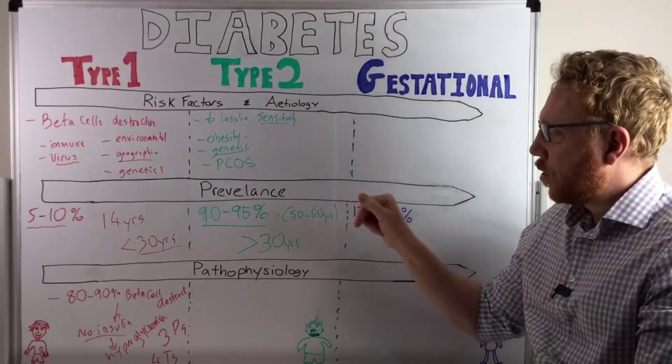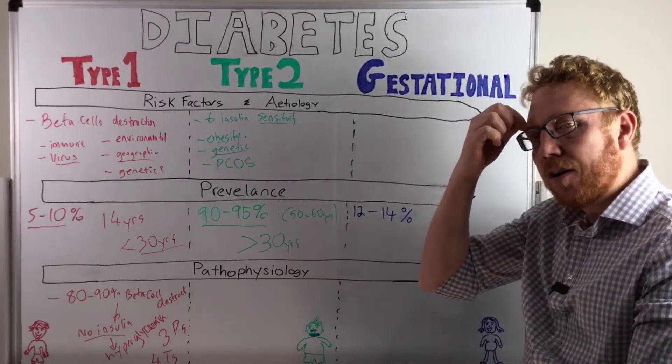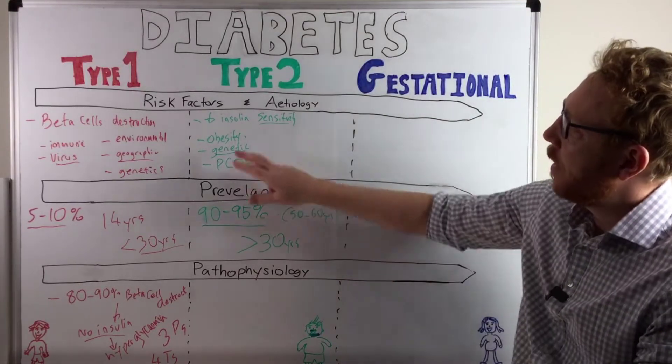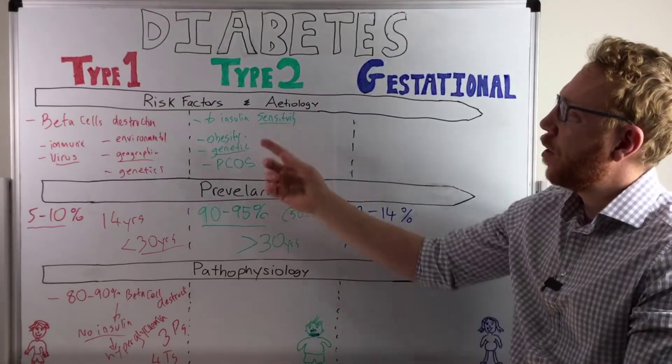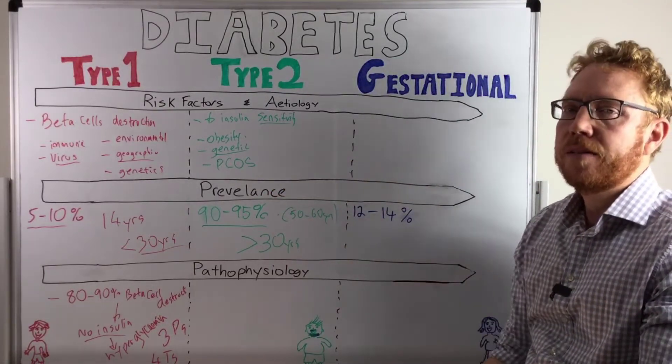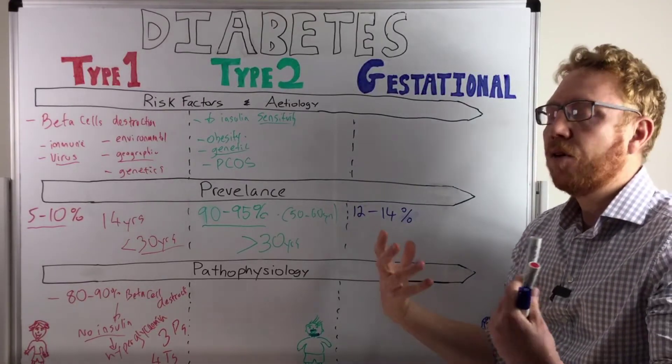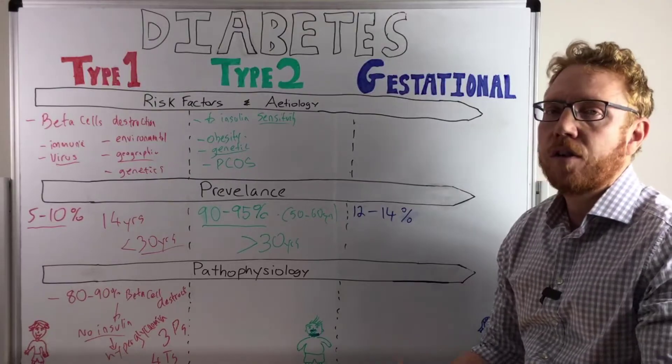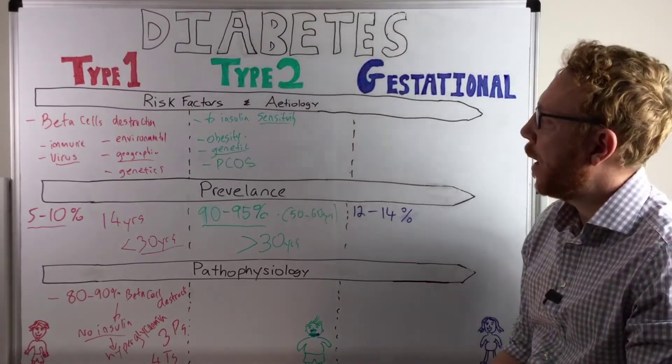But it's important to note that this age is dropping, so the incidence of people being diagnosed with type 2 diabetes is becoming younger and younger, probably linked to the obesity. And one thing I will note with obesity, this is not only peripheral obesity, but it seems to be more strongly linked to obesity or fat deposited within viscera. So around the organs, like around the liver and around the pancreas.